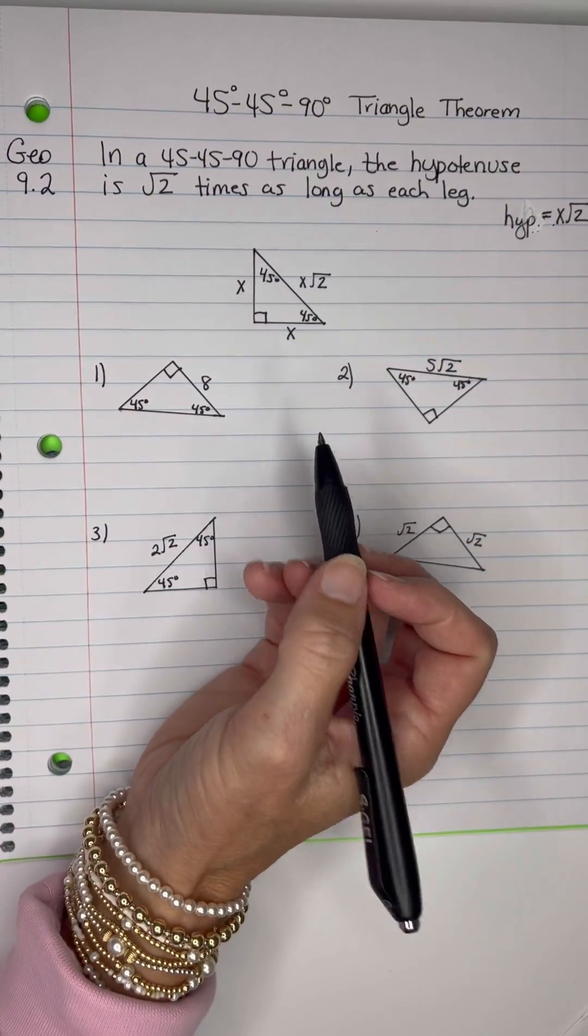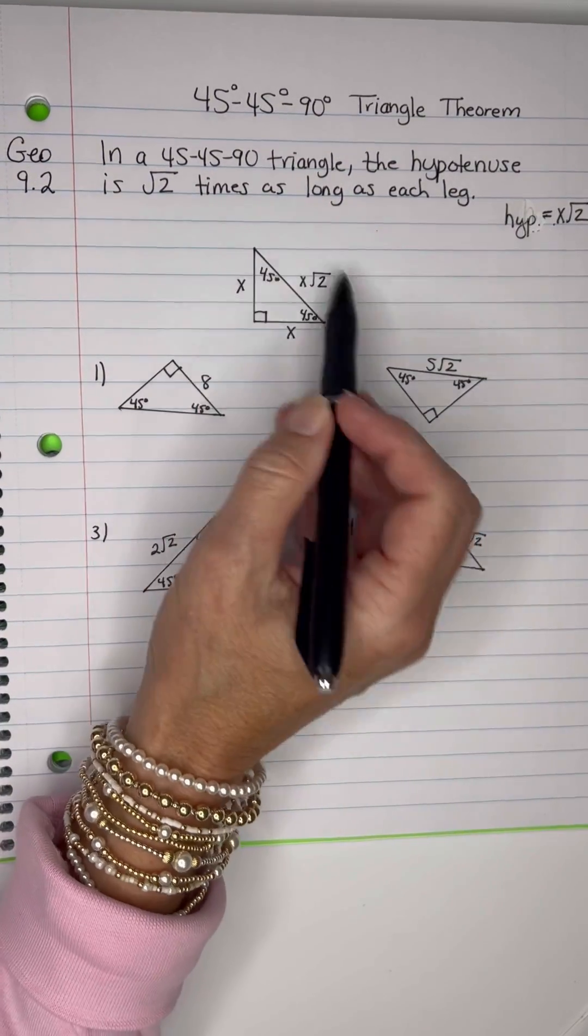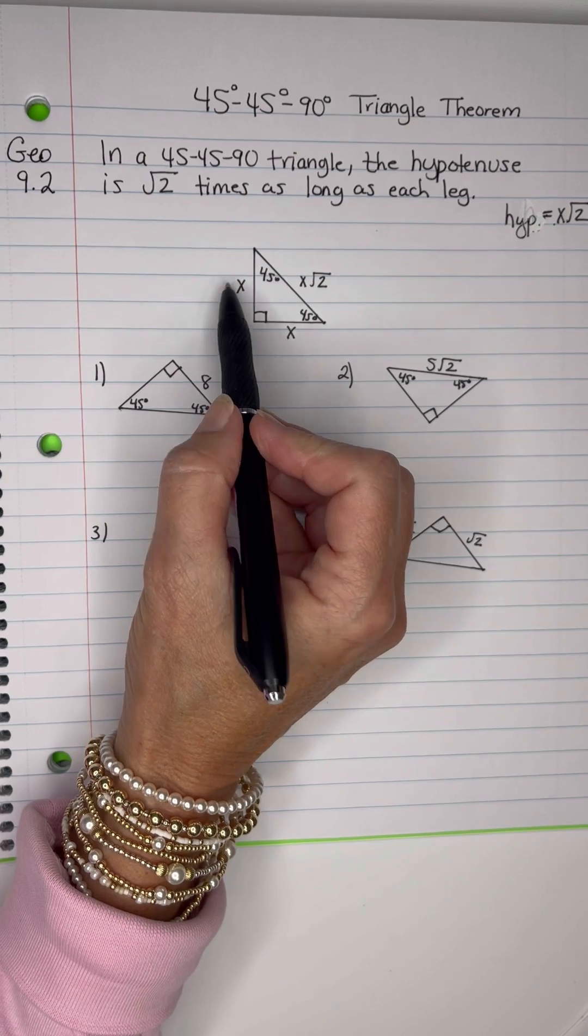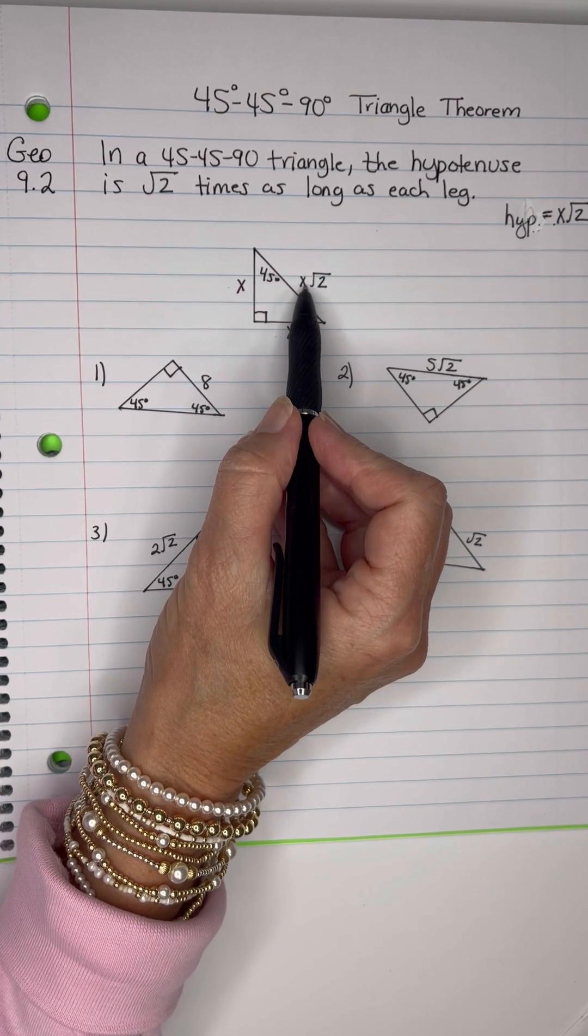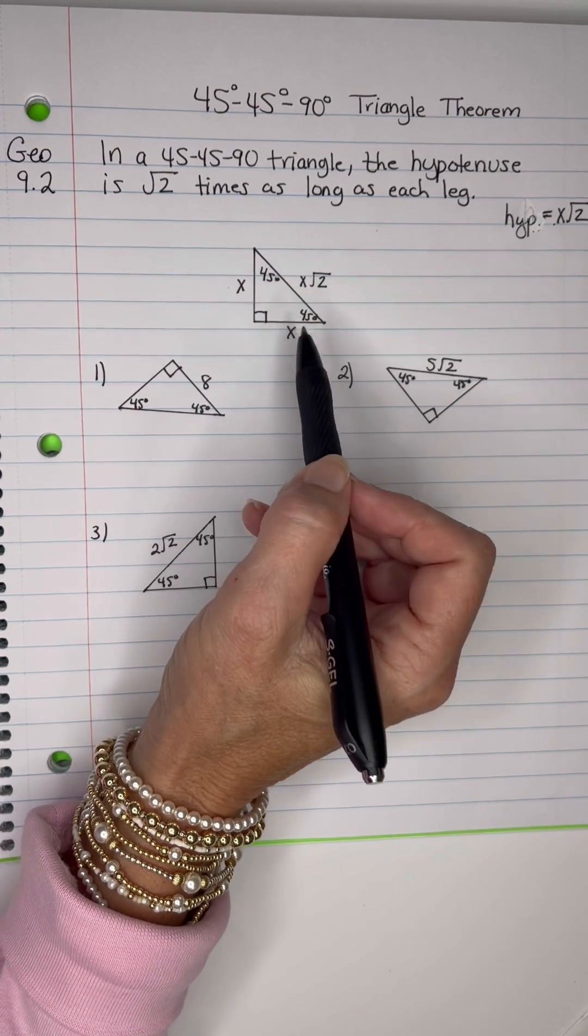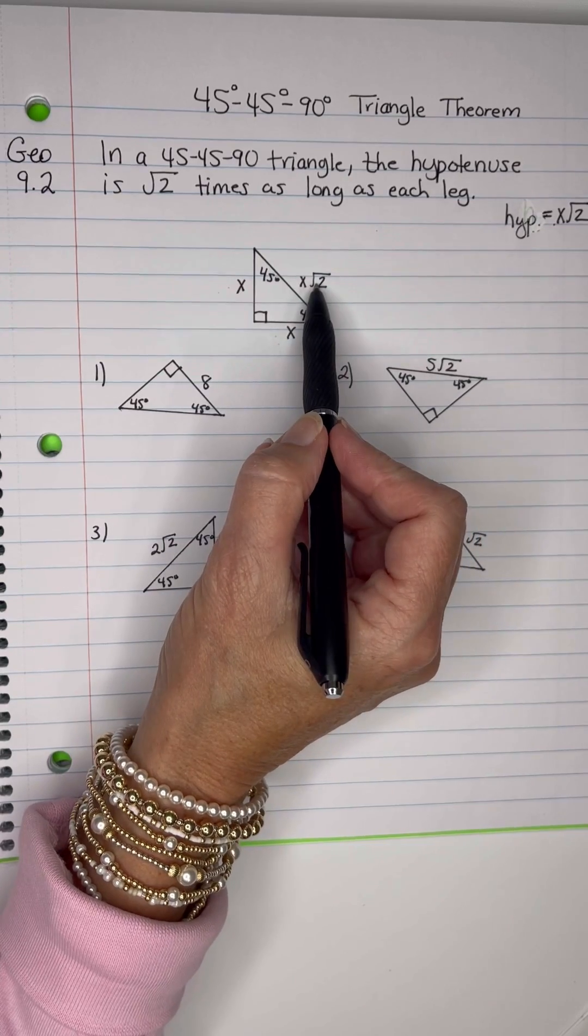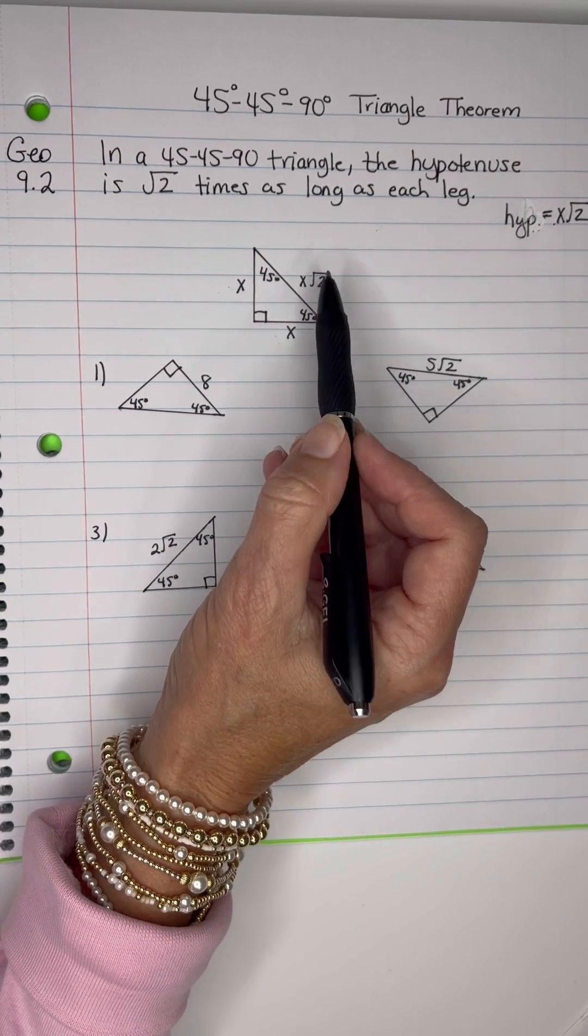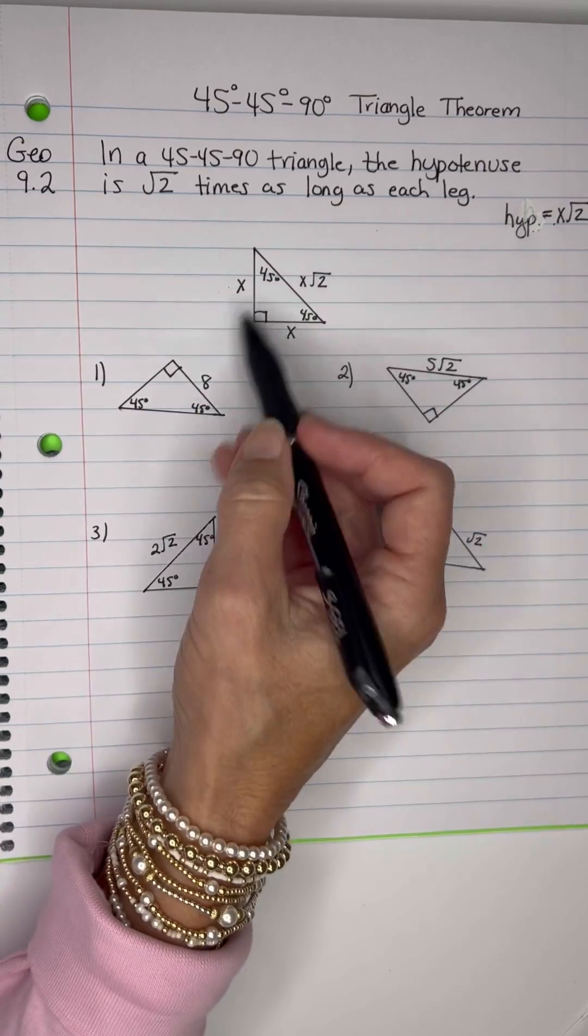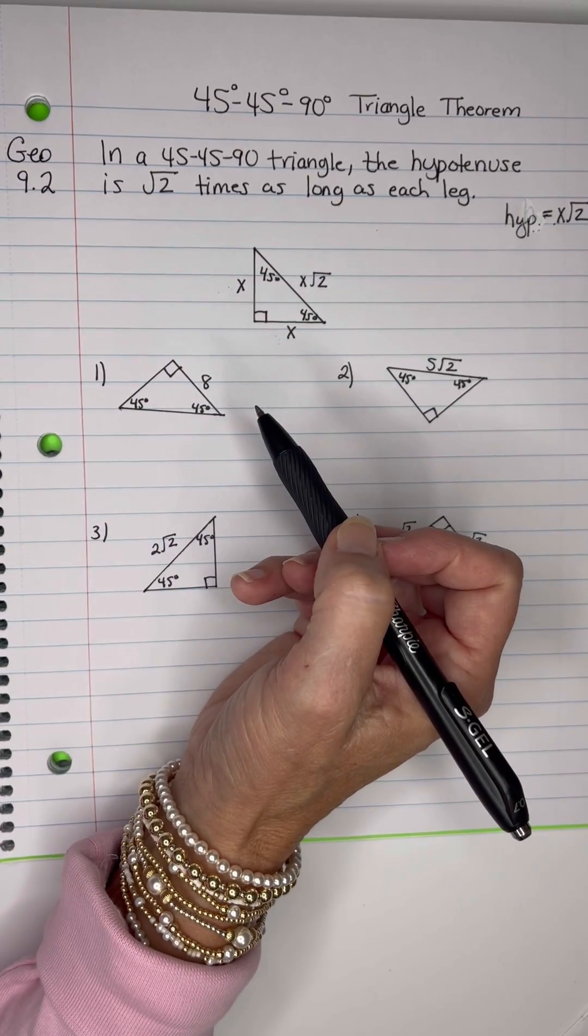Alright, let's look at this. If the leg was 4, this leg would be 4 and this leg would be 4 root 2. If this leg was 10, this leg would be 10, this leg would be 10 root 2. If this were 8, this would be 8, this would be 8 root 2, and here we go with one that has an 8 there.